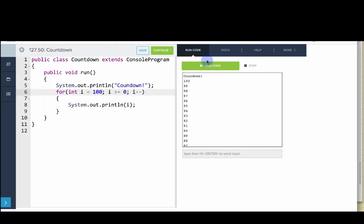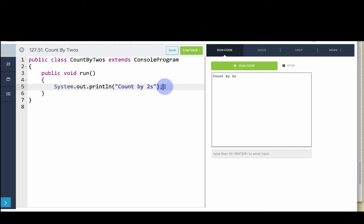Let's take a look at the other program. So in this program we're going to count by twos from zero to 100. So we'll say for int i equals zero, i is less than or equal to 100, i plus equals two.